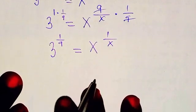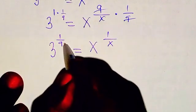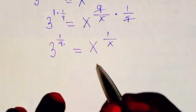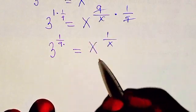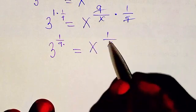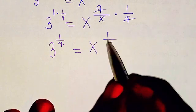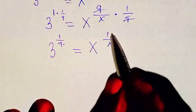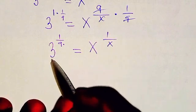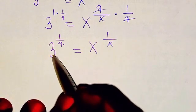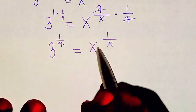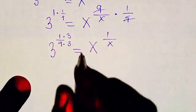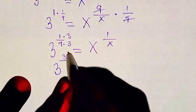The next thing we are going to do — notice we have x to the power of 1 over x on the right. I want to write the left-hand side so it looks the same: a base raised to its own reciprocal. So I want something on the left where the base is raised to its own reciprocal, the same way we have x raised to 1 over x on the right.